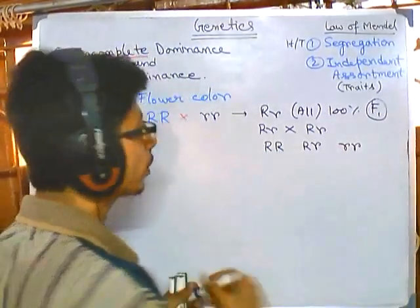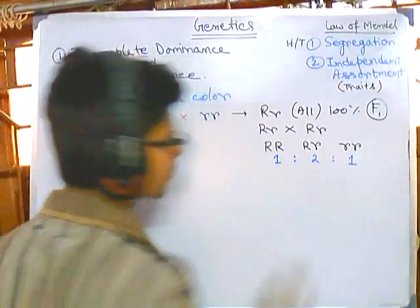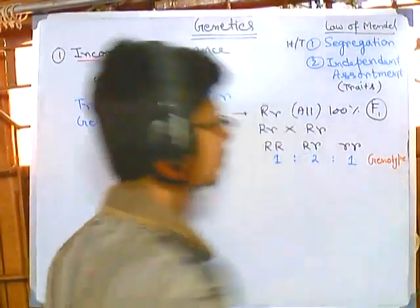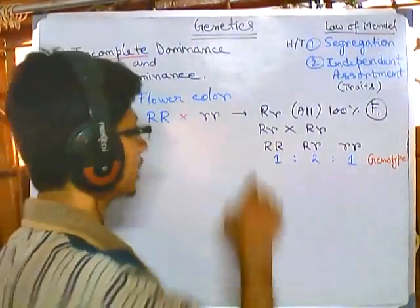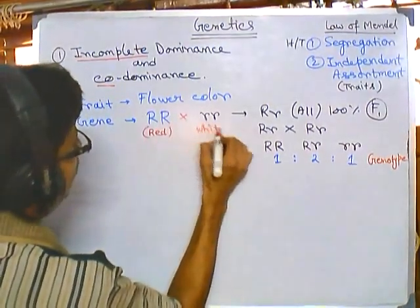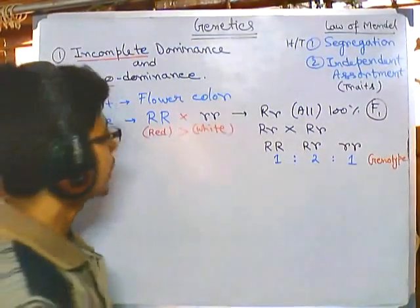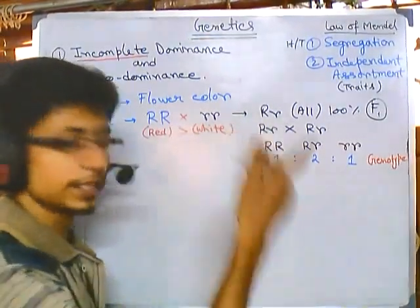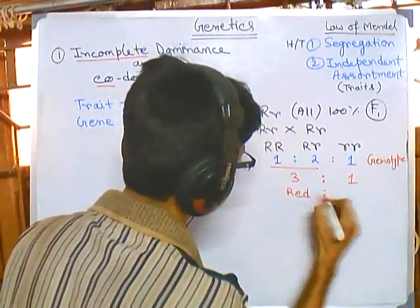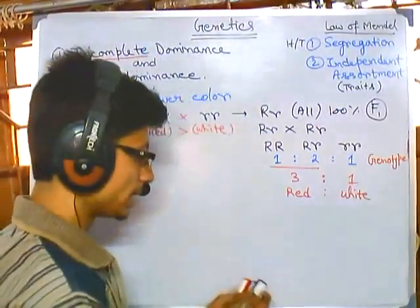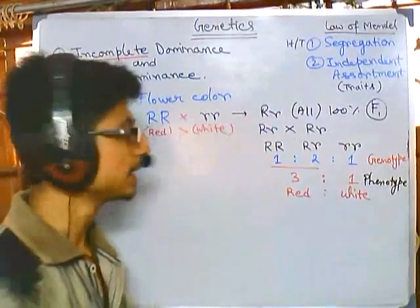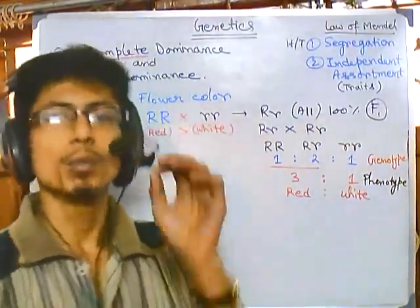According to Gregor Mendel, the genotypic ratio is 1:2:1 — that is RR : Rr : rr. Now for the phenotypic ratio: capital R means red color, small r means white color, and red is dominant over white. So heterozygous Rr gives red. Both RR and Rr give red, and rr gives white. The phenotypic ratio of red to white is 3:1. This is the Mendelian monohybrid cross result.